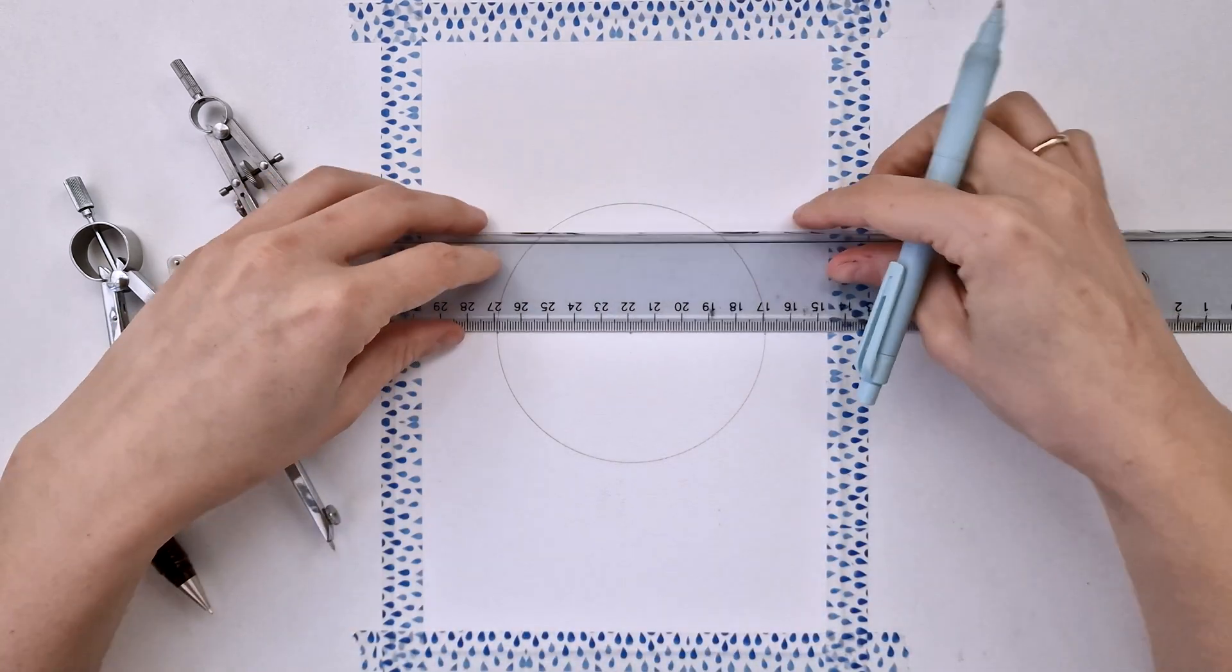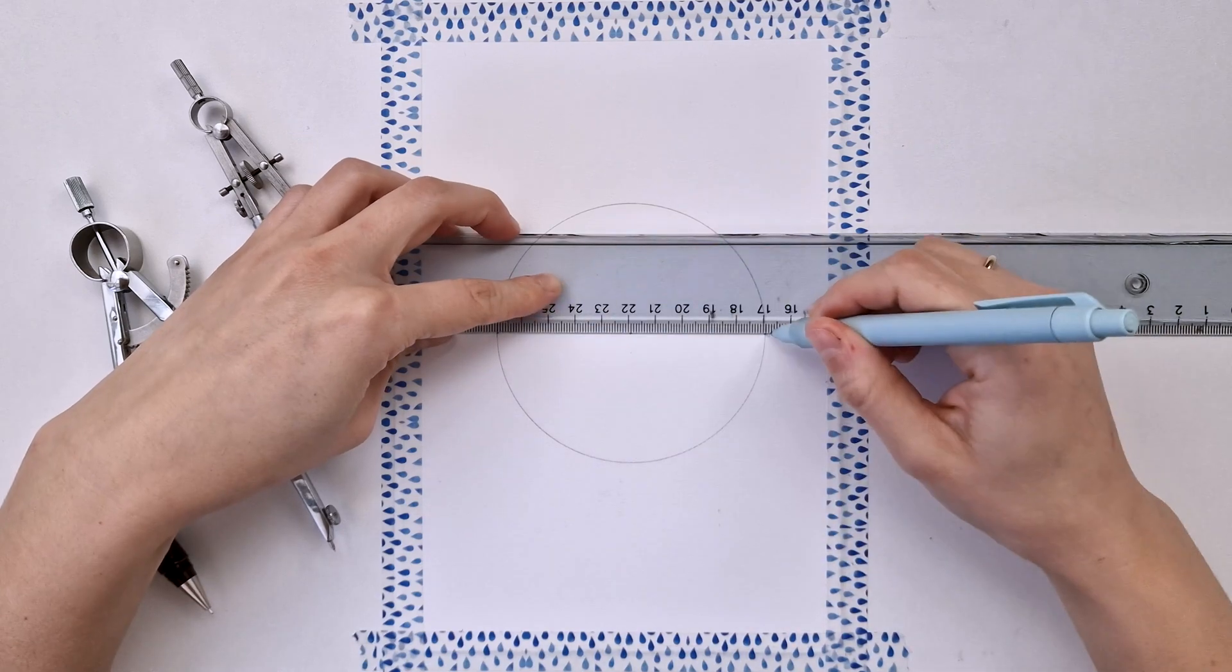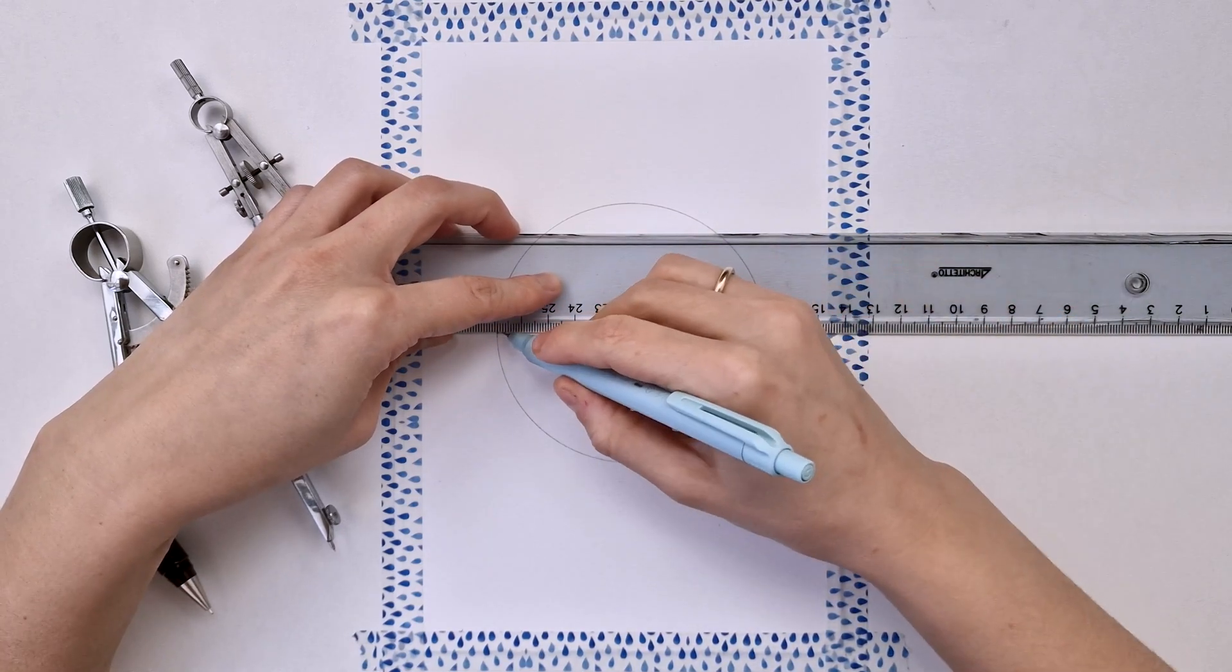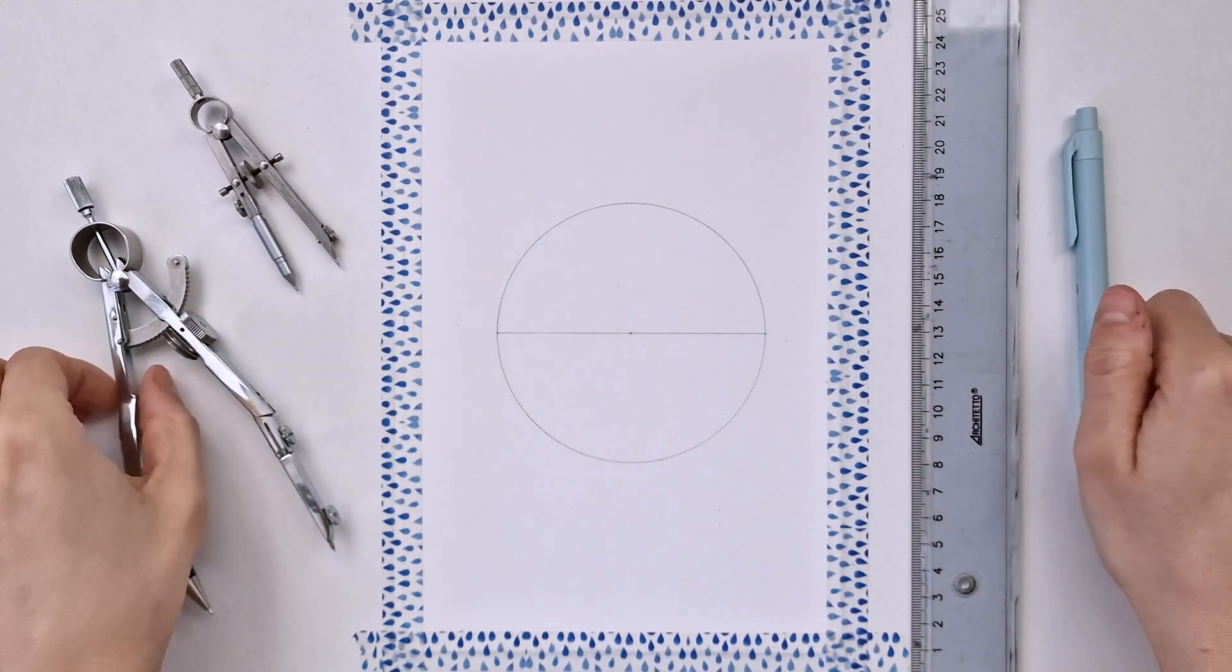So let's start with our circle. I'm using a 5 centimeters radius here but you can use any radius you like. Next we are drawing our horizontal line, so we always start with a horizontal line passing through the center.